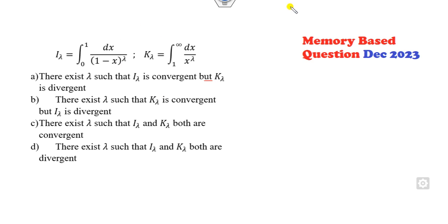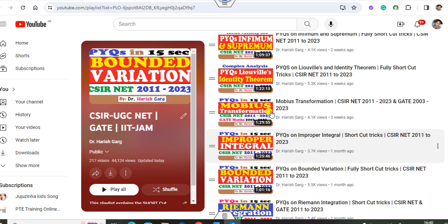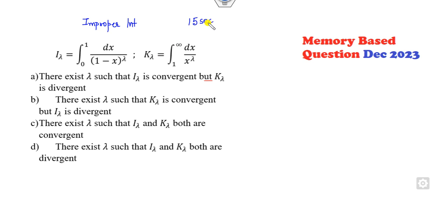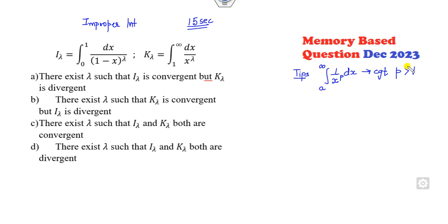Let's start with the first question. If you look at this, it is nothing but an improper integral. If you watched my last lecture on improper integrals, you can solve this question within 15 seconds using the shortcut trick. The shortcut is: whenever you have the integration from a to infinity of x raised to power p, this is convergent when p is greater than 1, and divergent when p is less than or equal to 1.